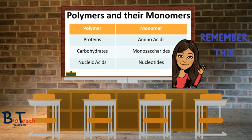You will also be aware of the monomers that the main three polymers are made up of, as this is something you learn in GCSE. We know that proteins, such as hemoglobin, are made up of amino acids. We know that carbohydrates, such as starch or cellulose, are made up of monosaccharides. And we also know that nucleic acids, like DNA, are made up of nucleotides.